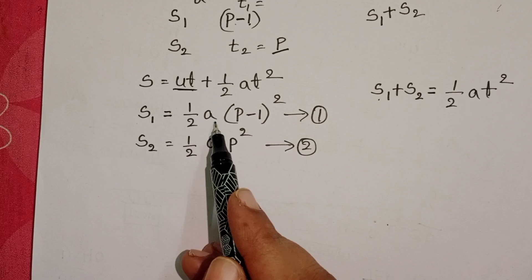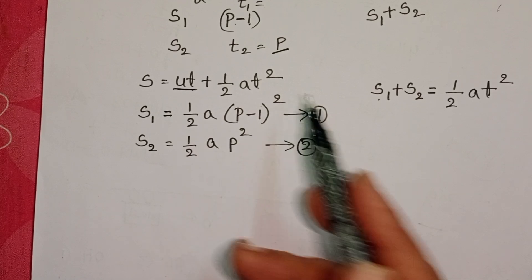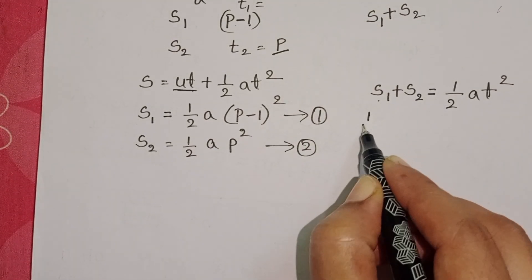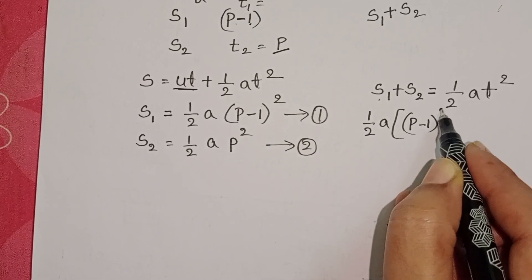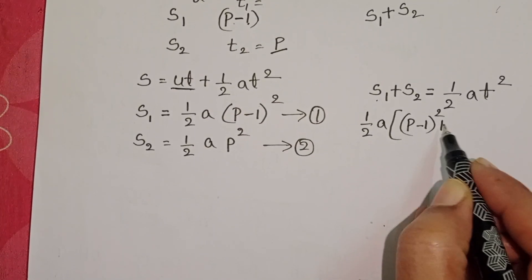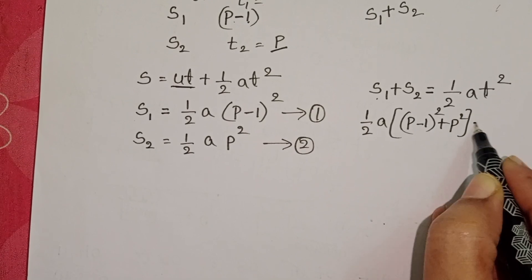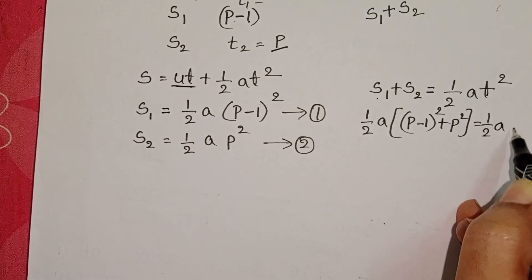S1 is half A into P-1 whole square, so take half A common. Half A into P-1 whole square plus P square equals half A T square.